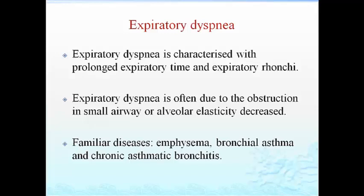Expiratory dyspnea is characterized by prolonged expiratory time and expiratory rhonchi. It occurs due to obstruction in the small airway or decreased alveolar elasticity, making it difficult to expire the air already in the lungs. Diseases associated with expiratory dyspnea include emphysema, bronchial asthma, and chronic asthmatic bronchitis.